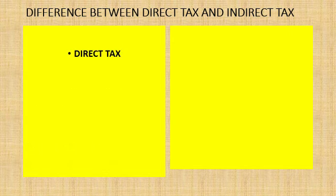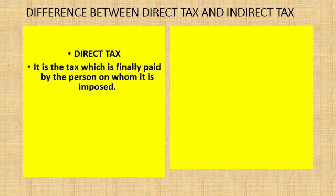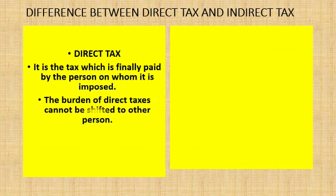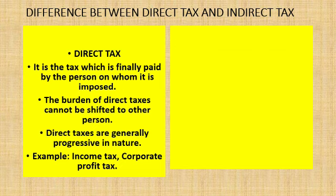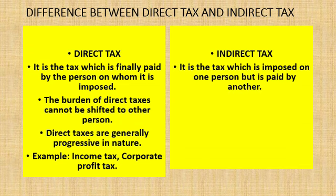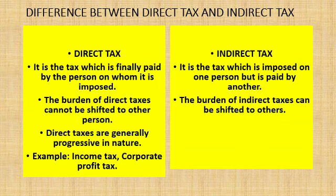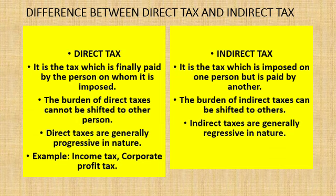Direct tax: it is a tax which is finally paid by the person on whom it is imposed, and the burden cannot be shifted to another person. Direct taxes are generally progressive in nature. Examples: income tax, corporate profit tax. Indirect tax: it is imposed on one person but paid by another, and the burden can be shifted. Indirect taxes are generally regressive in nature. Examples: GST, custom duty. That's all for today. Have a good day.